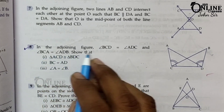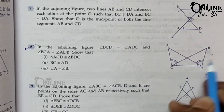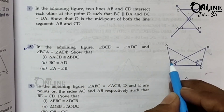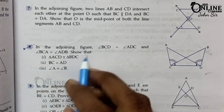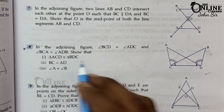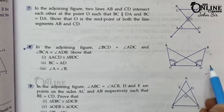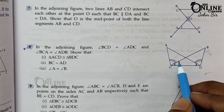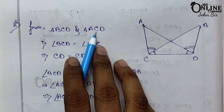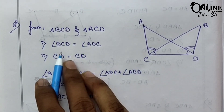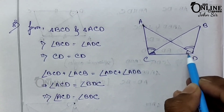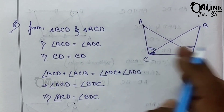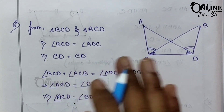Sum number 8. In the adjoining figure, angle BCD equal to angle ADC, angle BCA equal to angle ADB. Triangle ACD is congruent with triangle BDC. To prove these two triangles congruent, first condition: angle BCD equal to angle ADC — given. Second condition: CD is the common side of both triangles ACD and BDC. Now we need to find the third condition.